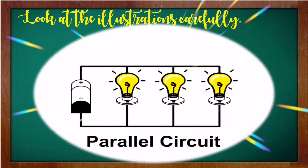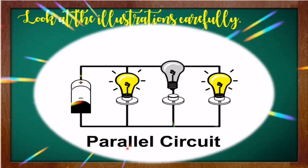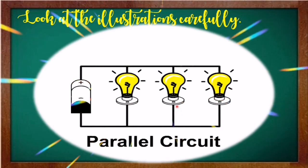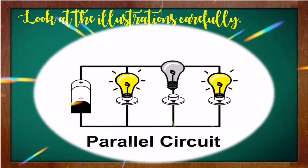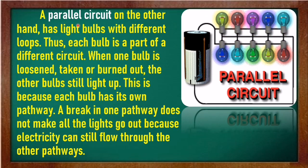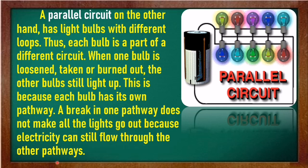Look at this illustration carefully. This is an example of a parallel circuit. Even if one light is removed, the other lights will still light up. A parallel circuit has light bulbs with different loops. Thus, each bulb is part of a different circuit. When one bulb is loosened, taken, or burned out, the other bulbs still light up. This is because each bulb has its own pathway. A break in one pathway does not make all the lights go out because electricity can still flow through the other pathways.